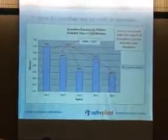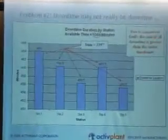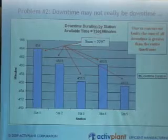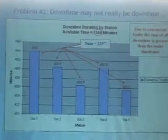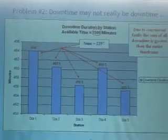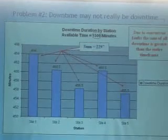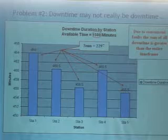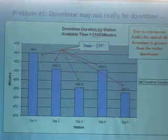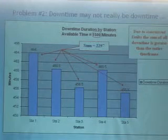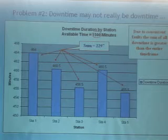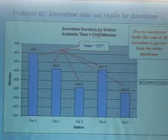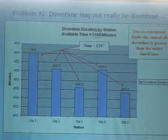Problem number two: downtime may not really be downtime. When one machine goes down, it could cause others before or after in the process to fault. If you're measuring a machine's inability to perform as downtime and ignoring external causes, you can end up counting downtime that isn't technically downtime. Accurately accounting for concurrent faults and attributing those faults to the right machine is key. If a machine is starved for parts or blocked upstream, it shouldn't be penalized. We can see the sum of downtime here is 2,297 minutes, yet the available shift time is only 1,500 minutes.